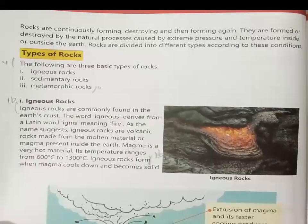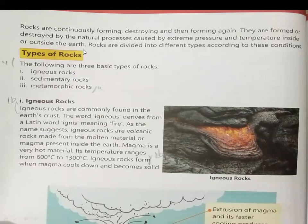Now, rocks are continuously forming, destroying and then forming again. They are formed or destroyed by natural processes caused by extreme pressure and temperature inside and outside the Earth. The rocks are destroyed by natural processes. Rocks are divided into different types according to these conditions.